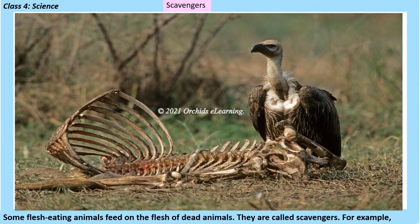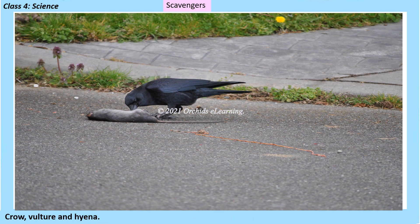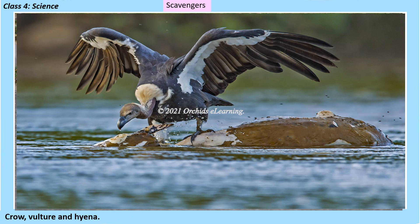Some flesh-eating animals feed on the flesh of dead animals — they are called scavengers. Examples include crow, vulture, and hyena.